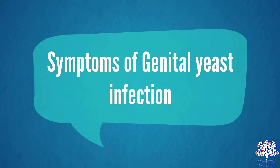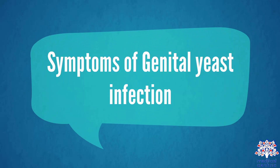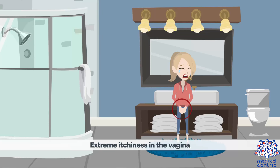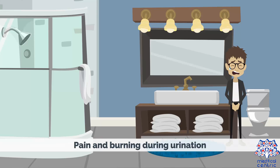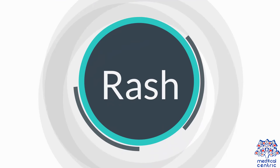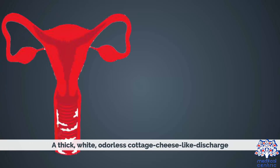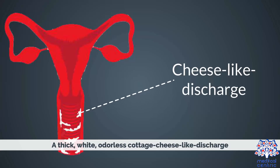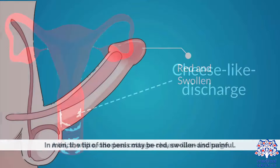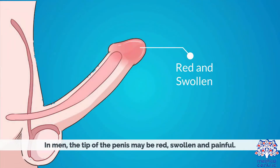Symptoms of genital yeast infection include extreme itchiness in the vagina, discomfort during sex, pain and burning during urination, rash, and a thick, white, odorless cottage cheese-like discharge. In men, the tip of the penis may be red, swollen, and painful.